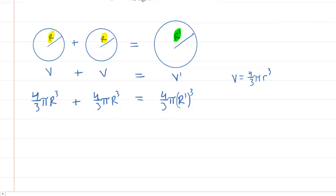All three terms of this equation have a 4/3π in them, so we can actually divide that term out. We would be left with r³ + r³ is equal to r prime cubed. Of course, we can add the terms on the left side to make 2r³, and then that's equal to r prime cubed.